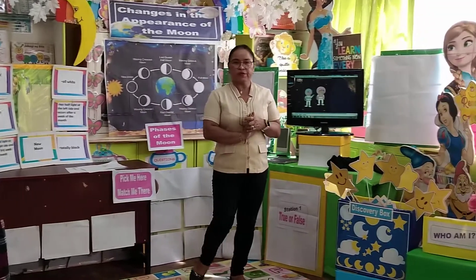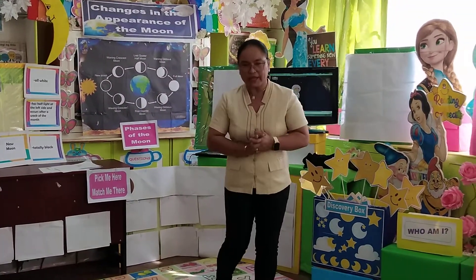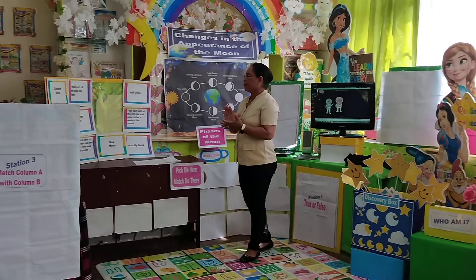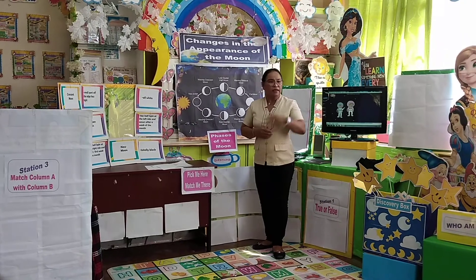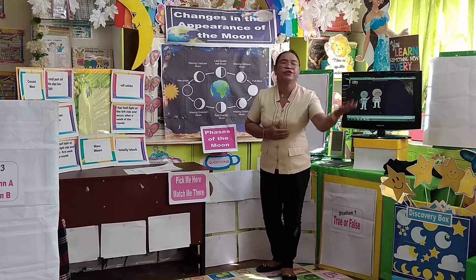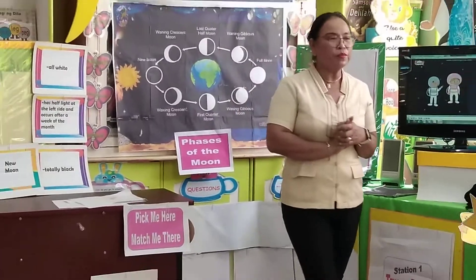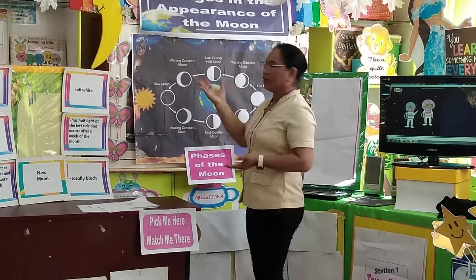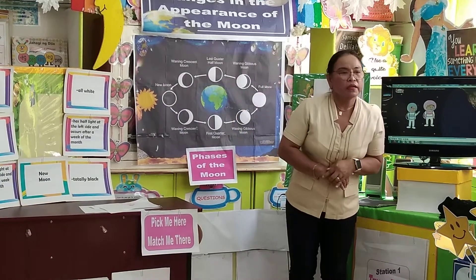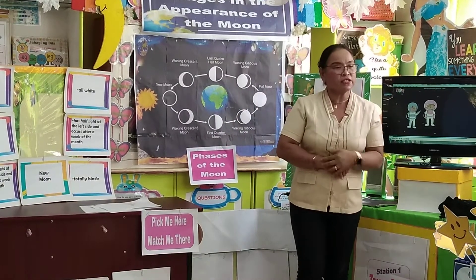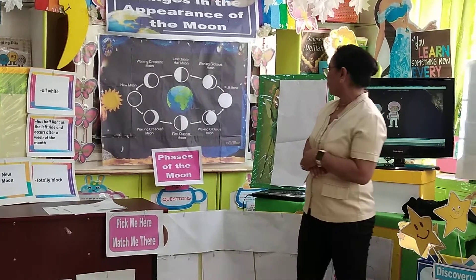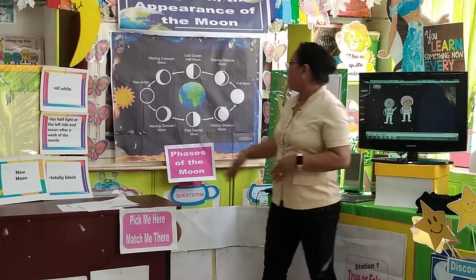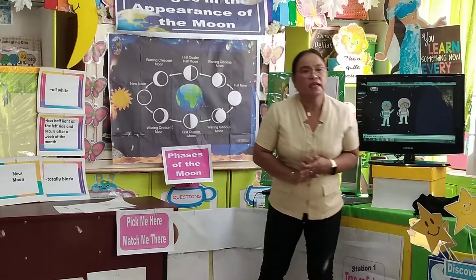So this is our first activity. Did you understand? Now let's try to explain. The first phase of the moon is called the...? Brando? New moon. Very good. How will you describe the new moon? July — it's totally black. Very good. The second phase of the moon — what is it? Caroline — waxing crescent. How will you describe waxing crescent? Part of the moon is seen.